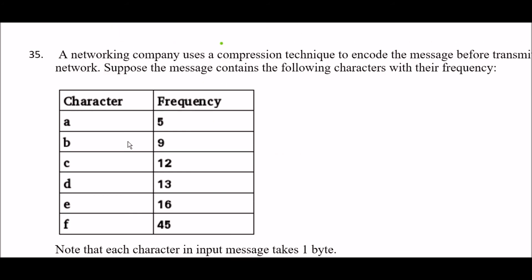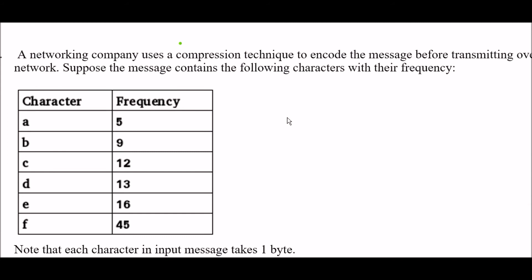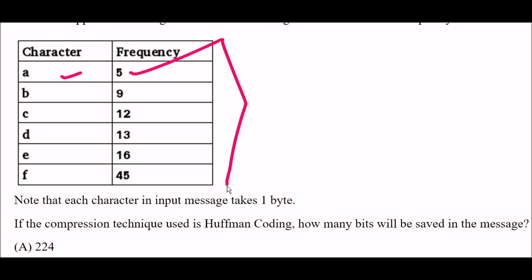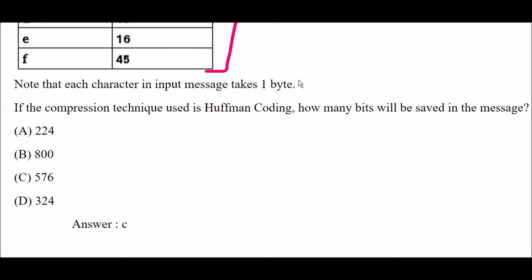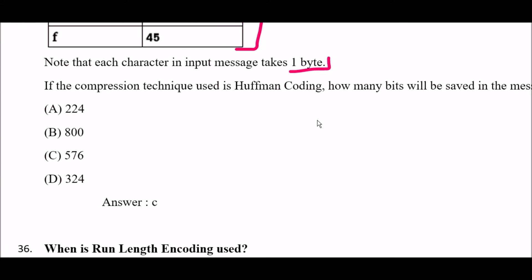Next question: a networking company uses a compression technique to encode a message before transmitting over the network. The message contains characters with given frequencies, and each character in the input message takes one byte. How many bits will be saved in the message? Option A: 224, option B: 800, option C: 576, option D: 324. After solving, the right answer is option C — 576 bits.